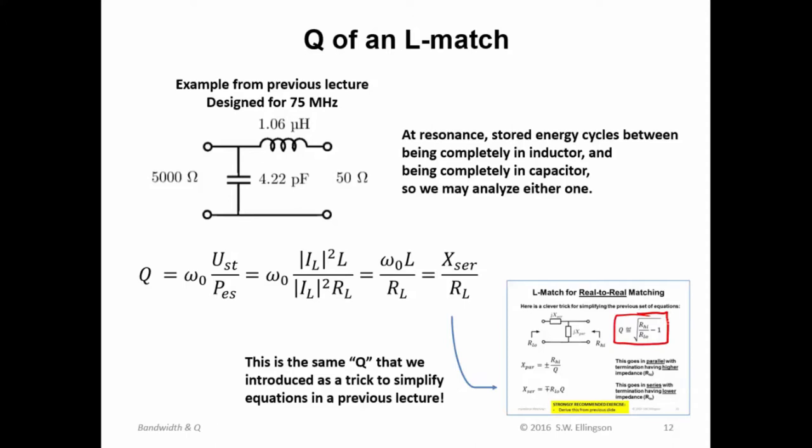Now, in that previous lecture, we invoked that idea purely for mathematical convenience, purely to get these simplified expressions. However, when you look at this expression here, that is exactly the same as what's going on here. I see that X_SER is Q times the lower resistance, and that is the lower resistance. So the Q I have computed here is exactly the same as the Q I've computed here.